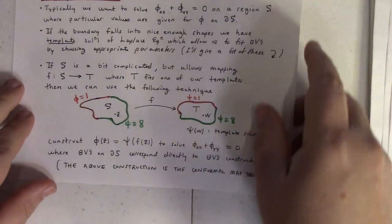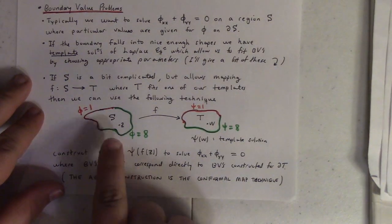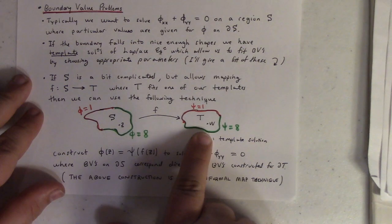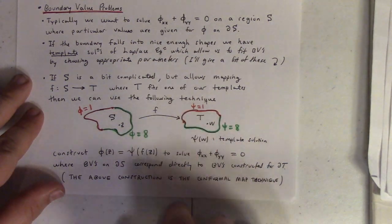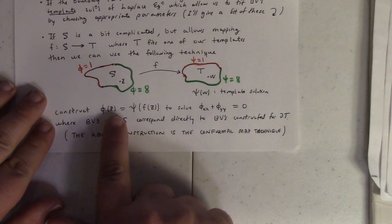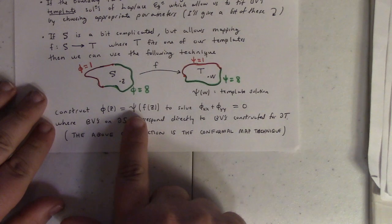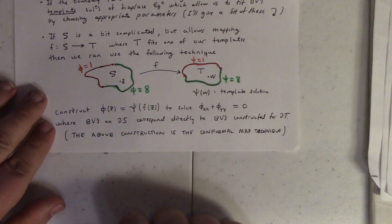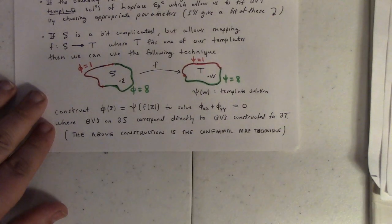I just wanted to show you enough to understand the big idea. To reiterate: take your region, map it to a less complicated region, use one of the template solutions to solve it there, and then the solution is simply φ(z) = template solution evaluated at w = f(z). And that's how you do it. Thanks, guys — have a good weekend.